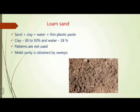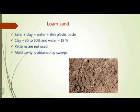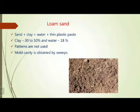Loam sand is composed of sand, clay, water, plus a thin plastic paste. The clay percentage is 30 to 50 percent and water is 18 percent. For loam sand, patterns are not used — the molding cavity is obtained by sweeps and molding equipment.